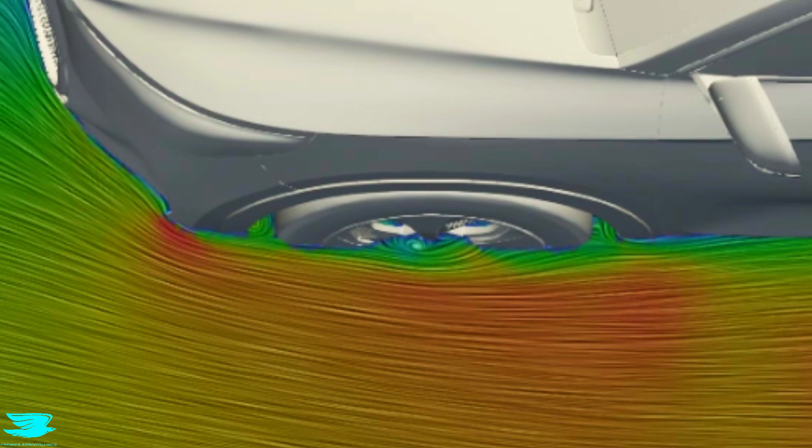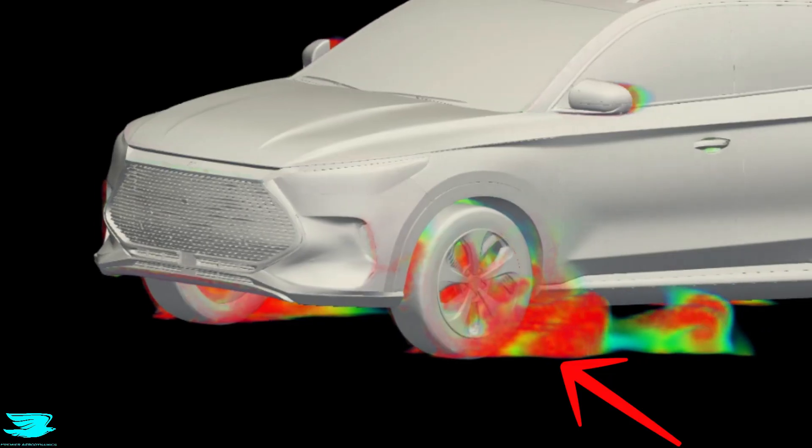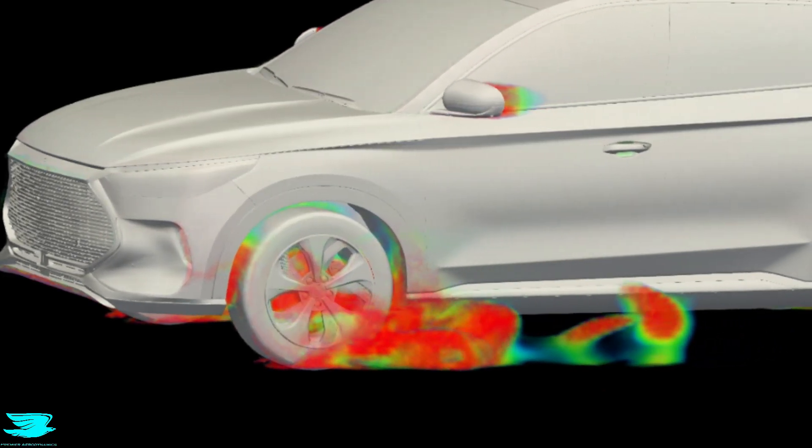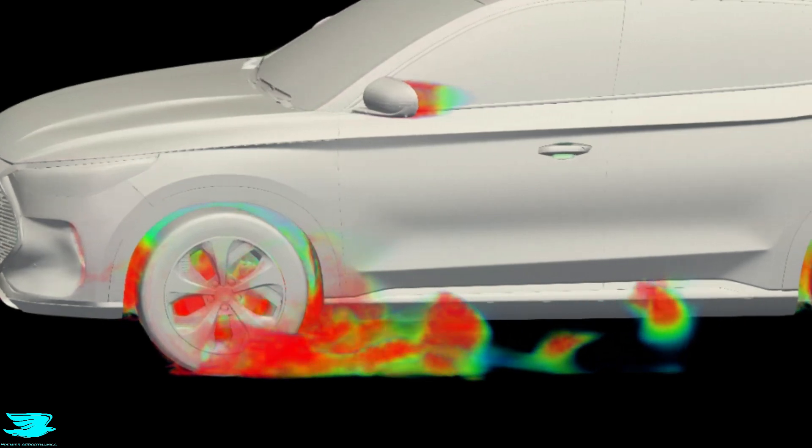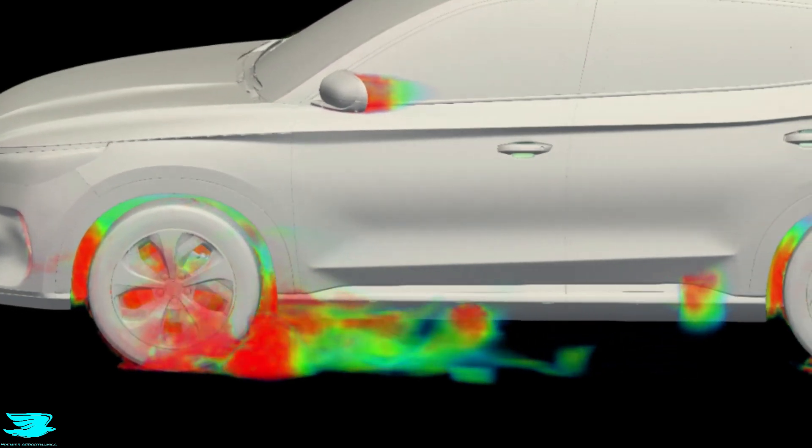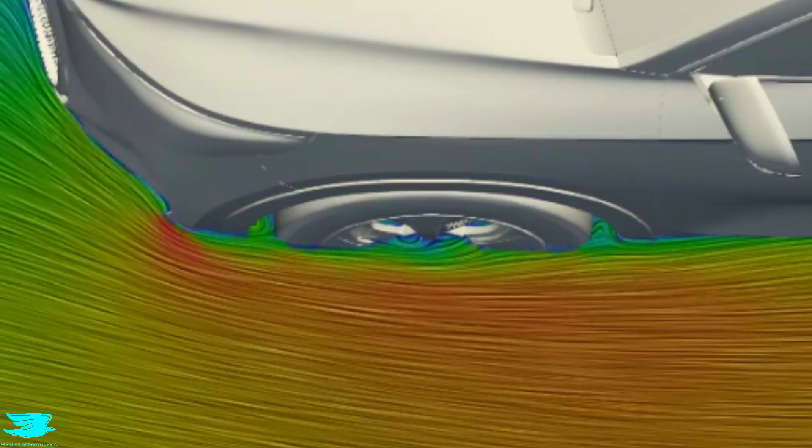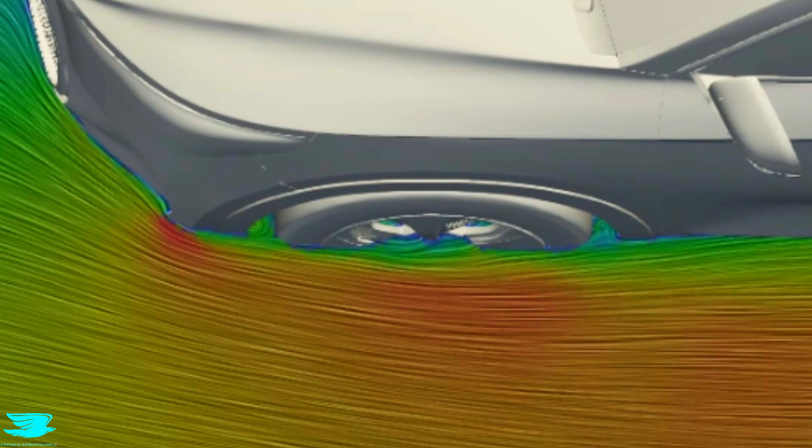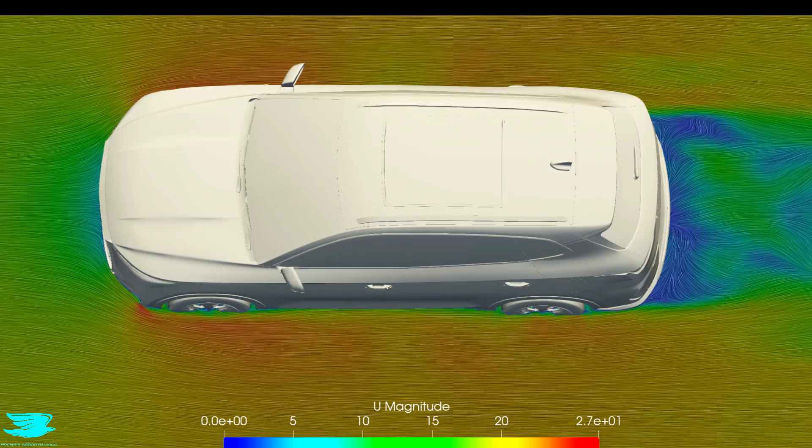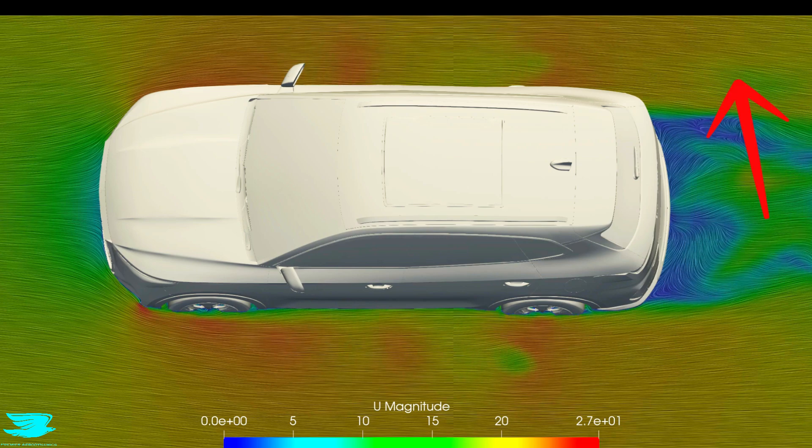Now having said that, while it does dramatically improve the flow around the side and reduce the drag, it doesn't reduce the drag as much as it might seem. Usually you're only looking at around 3 to 5 counts, so a percent or two. That's because it alters the wheelhouse flow as well, and also the flow exiting the wheelhouse. This simulation was done with OpenFOAM. If you'd like to learn OpenFOAM, then check out our courses here.